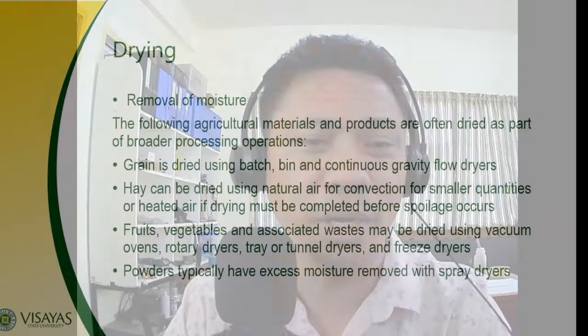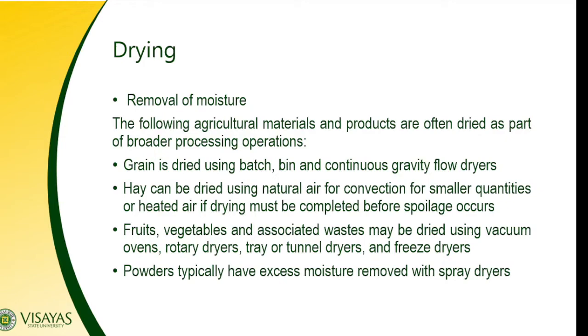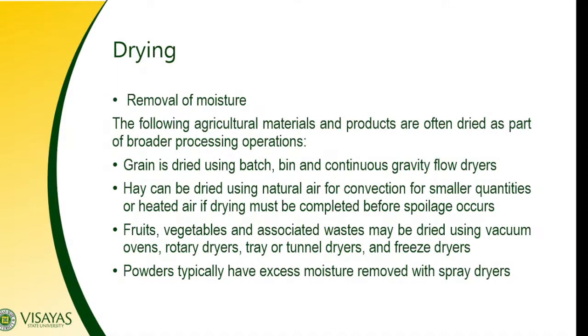The other one is drying. Drying is actually the removal of moisture. The resulting product can be called a dehydrated product or dried product. The following agricultural materials and products are often dried as part of broader processing operations. Grains are dried using batch bins or continuous gravity flow dryers. Fruits and vegetables can also be dried. Powders typically have their moisture removed by spray drying — for example, powdered milk undergoes spray drying.